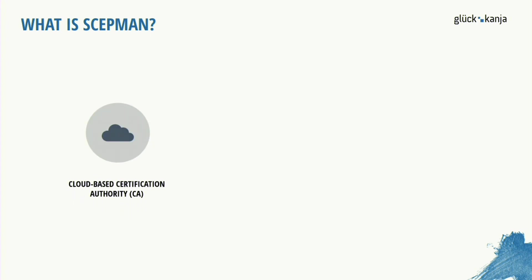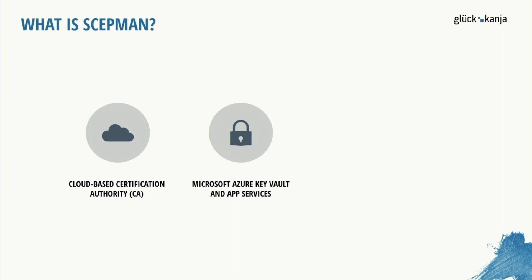So what is SCEPman? SCEPman is a 100% cloud-based certificate authority that we can use without any local infrastructure. For the technology we use Microsoft Azure Key Vault and App Services. These are standard services from Microsoft, and customers can use them with basic and enhanced functionalities, for example hardware encryption for keys stored in Key Vault or high availability for the app services.